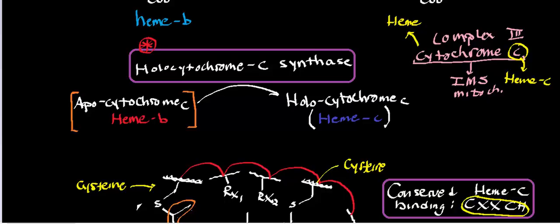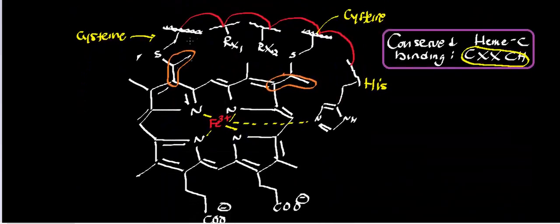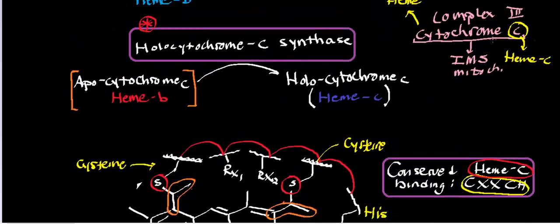Whenever you have these thiol linkages to cytochrome C on the heme moiety, you call it heme C. This arrangement as a whole is called heme C — it's the actual physical prosthetic group of cytochrome C when you have these thiol linkages to what were the vinyl groups. The actual substrate for this reaction is heme B, and in the process it gets transformed into heme C.